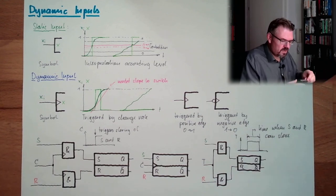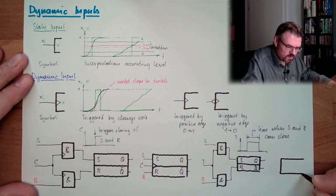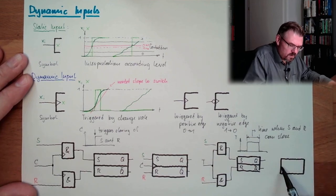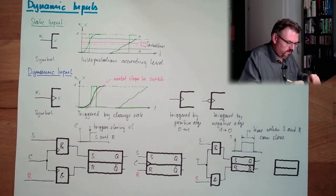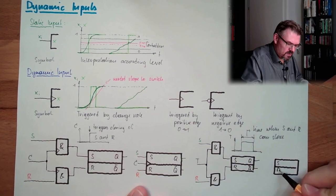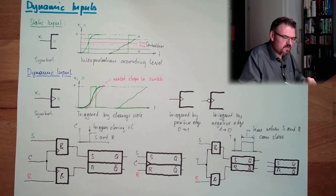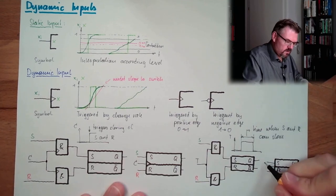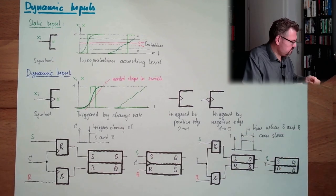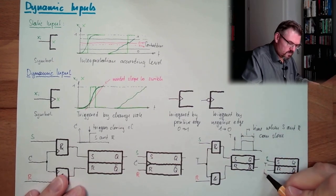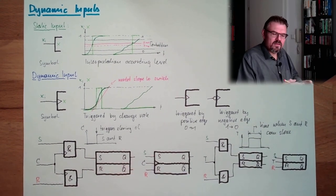This here has also a symbol, looking like that. Own symbol. That we have here S, R, Q, not Q. Here we have S, R and T lines. S, T, R. So that's, this is edge-triggered, and this is state-triggered.